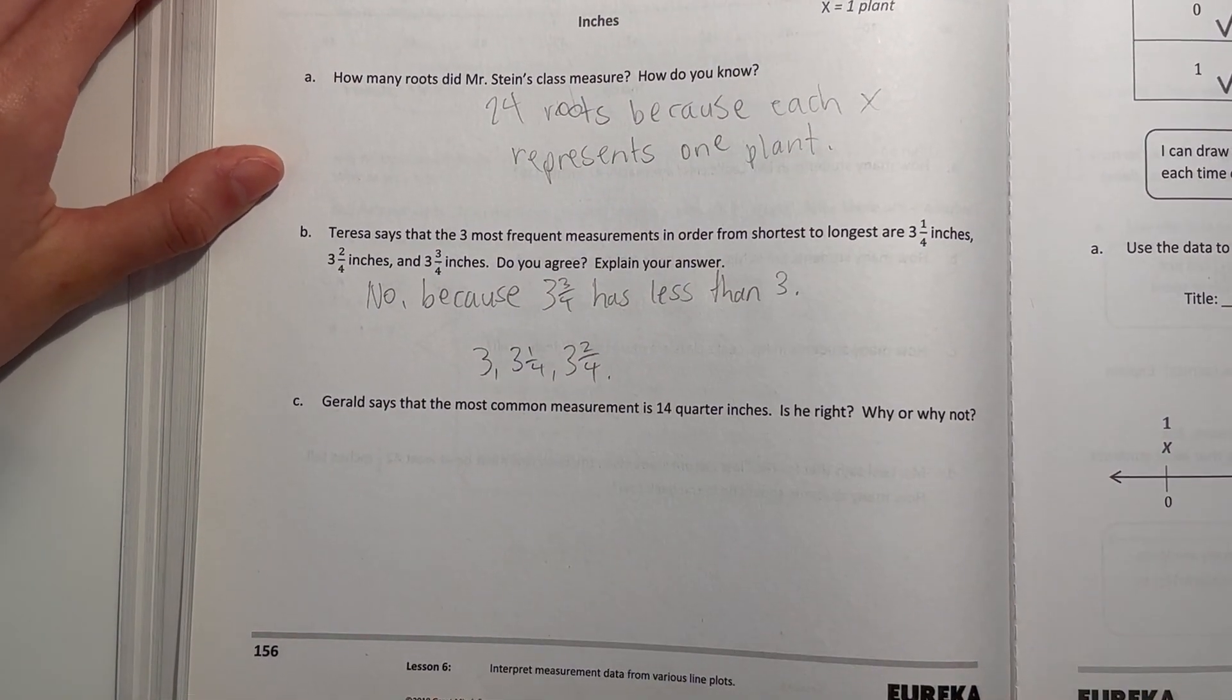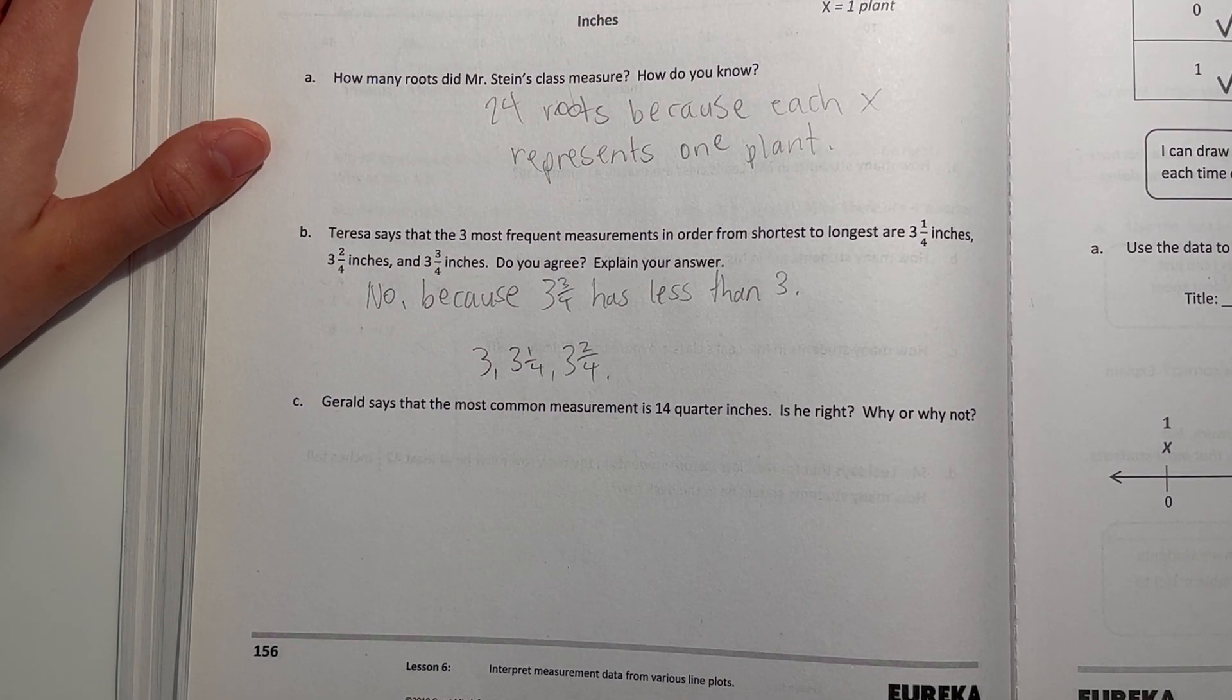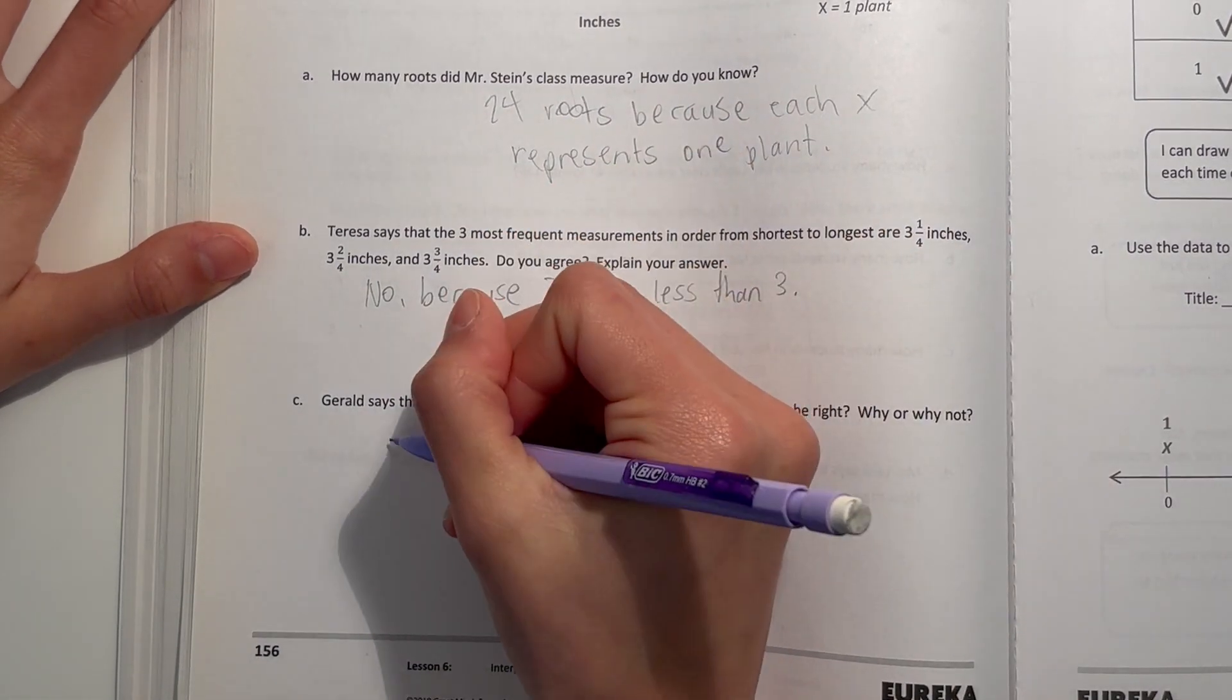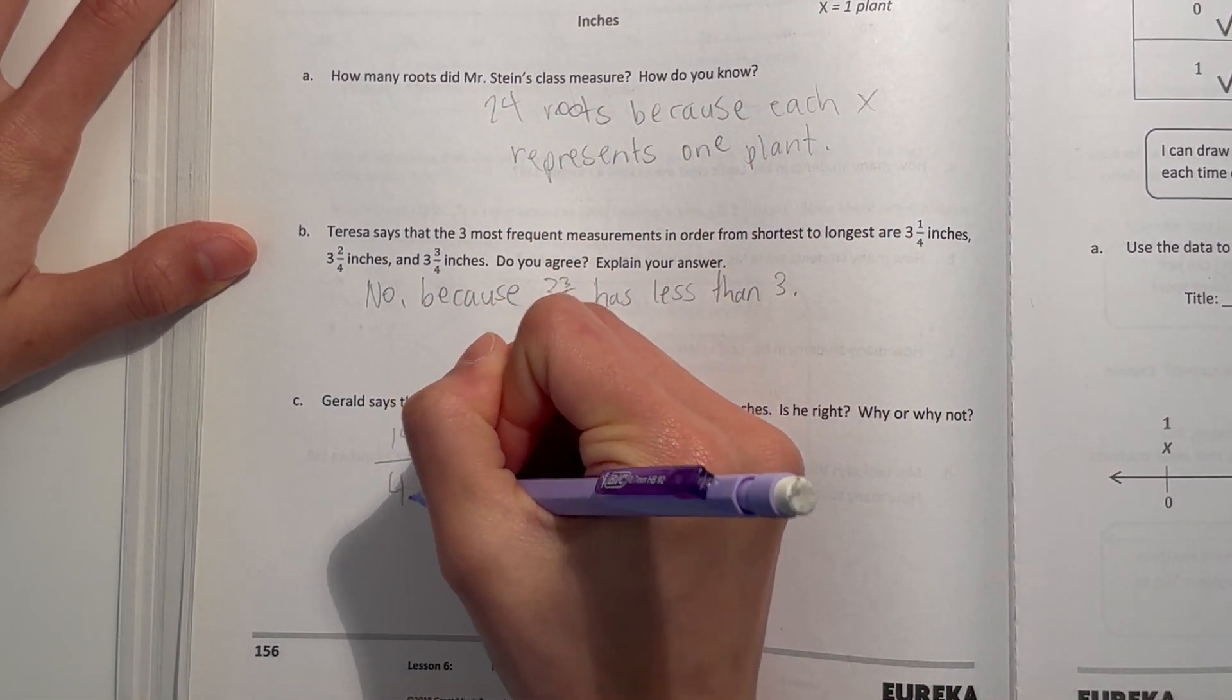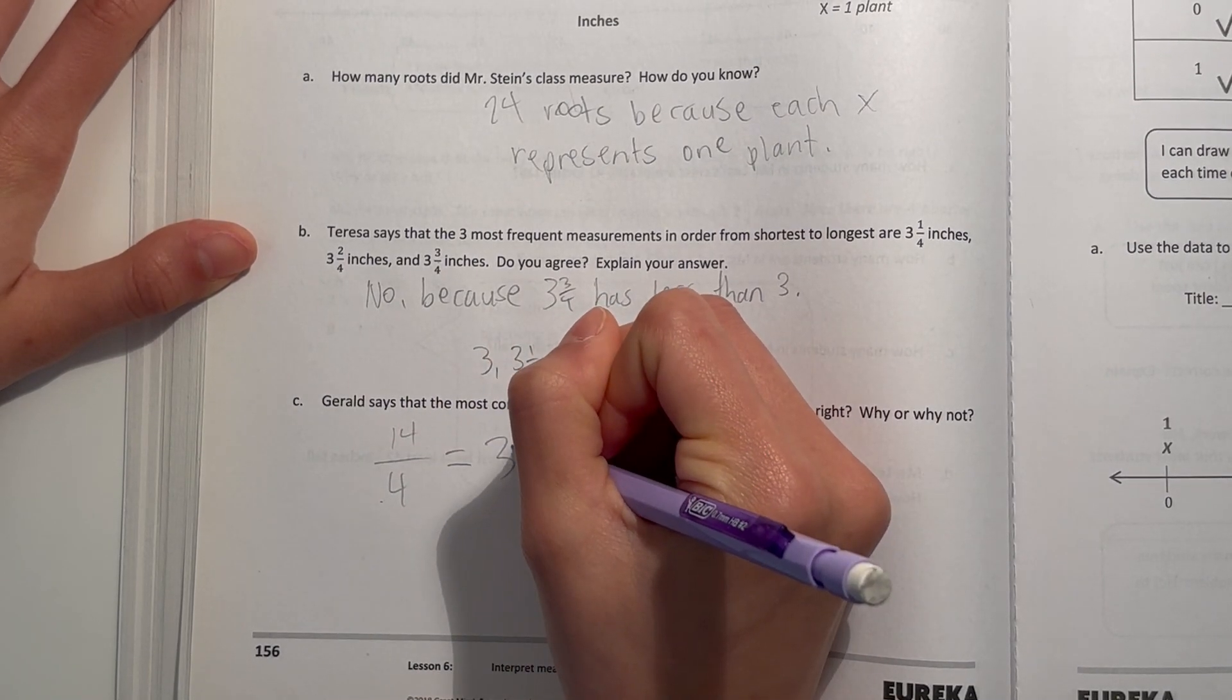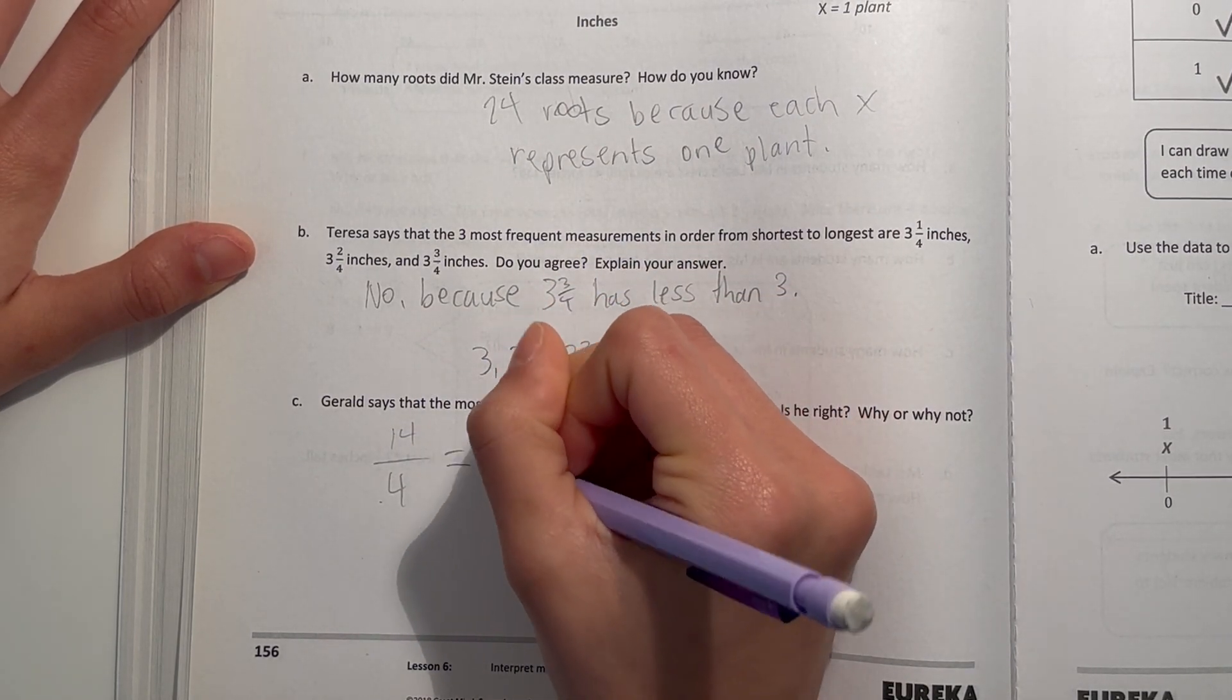Now C, Gerald says that the most common measurement is 14 fourths. Is he right? Why or why not? Well, 14 fourths simplifies to 3 and 2 fourths, because 4 times 3 is 12, and 14 minus 12 is 2. So 3 and 2 fourths.